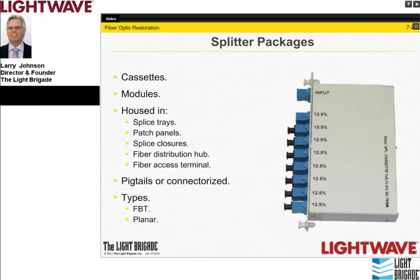Splitter packages include a 1×8 splitter in a modular cassette, with the split ratio specified at the ports using an SC-UPC interface on the input side. They can be placed in splice trays, patch panel packages, splice closures, fiber distribution hubs, fiber access terminals, or pedestals. FBT types can also be packaged in the same physical size as a fusion unit with heat shrink protection to fit into standard slots. One particularly useful configuration is the tap splitter.